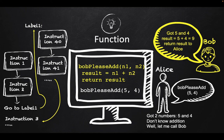But suddenly you realize that your friend Bob knows how to add it. So what will you do? You call Bob and then you tell Bob, "Bob, please add five and four." Now Bob got five and four from you.